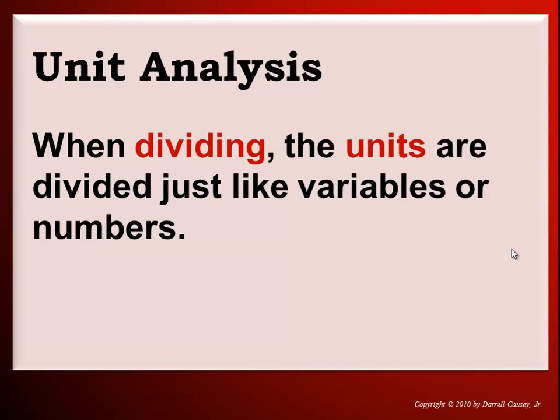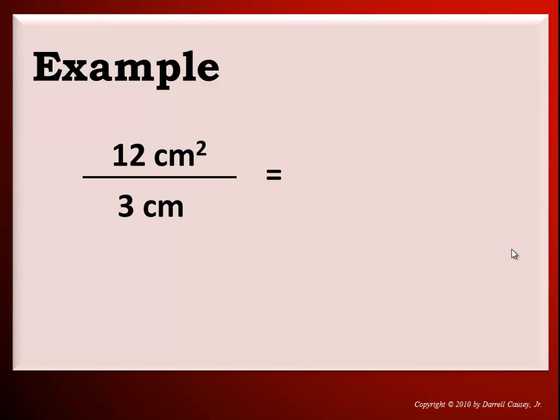When dividing, the units are divided just like variables or numbers. Let's look at an example. 12 cm squared divided by 3 cm. Now note that we can cross cancel one of the centimeters so that the centimeters on the bottom or in the denominator disappear and there's one left in the numerator, so our answer is 4 cm.